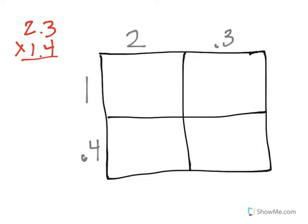So at this point I need to begin to multiply. I would start in this box which represents 1 times 2. We know that this would equal 2. In this box right here we are being asked to do 1 times 3 tenths, which I know would equal 3 tenths.